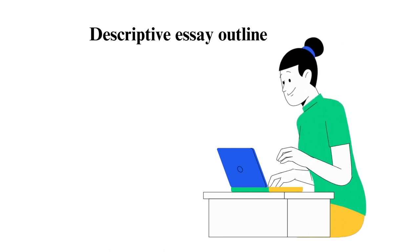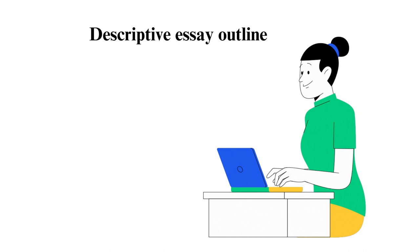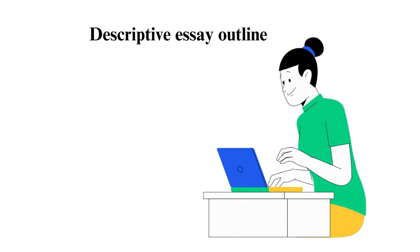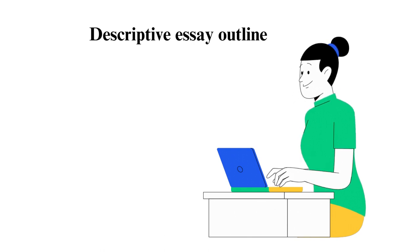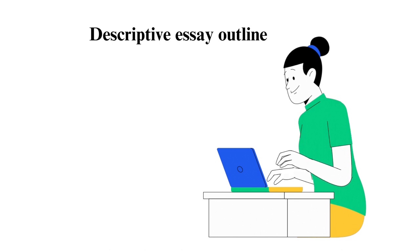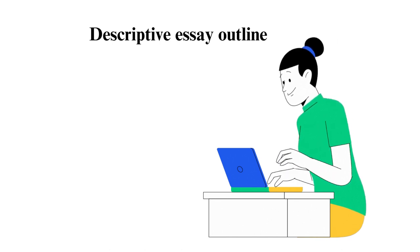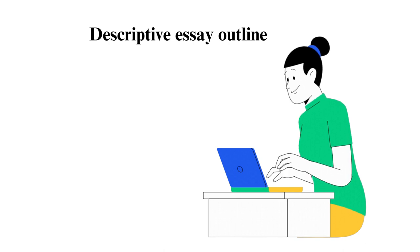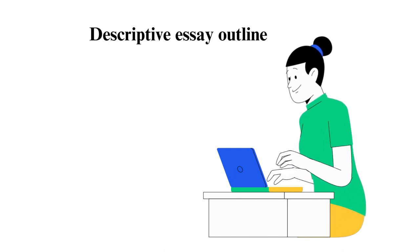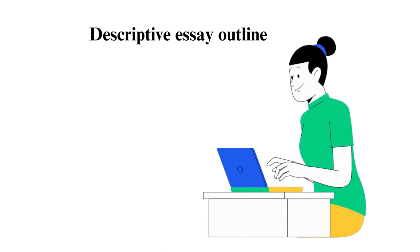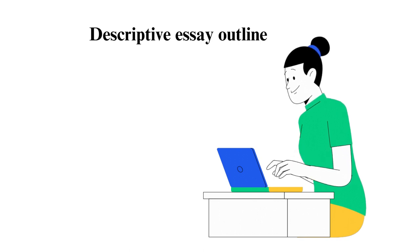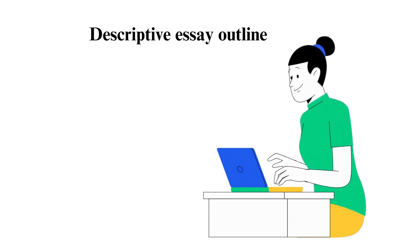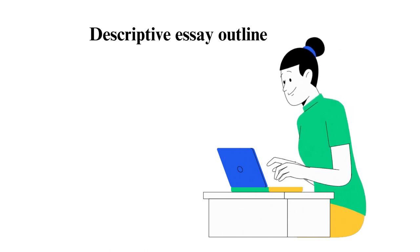Descriptive essay outline. A descriptive essay refers to a genre that asks the writer to describe something such as an individual, place, or object. Unlike a narrative essay, it does not focus on telling a story, but rather describing something specific. 1. Descriptive essay introduction: begin by introducing the object you aim to describe, as well as its importance, which will also help you form the thesis. 2. Descriptive essay body: begin each paragraph with a topic sentence describing what you will handle, and include vivid details. 3. Descriptive essay conclusion: summarize the main points of the paper, reflect on the essay's purpose, and finish with a strong concluding statement that helps the reader think further about the topic.